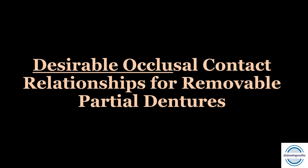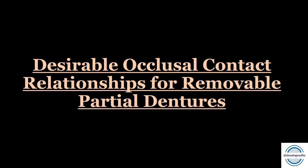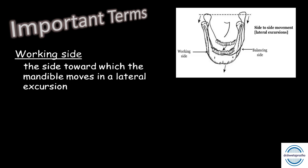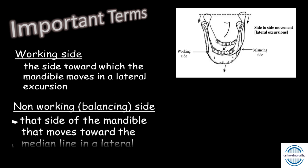Now let us study some desirable occlusal contact relationships for the removable partial denture, studied case-wise. These are very important as they come as objective questions. First, let us understand key terms. The working side is the side towards which the mandible moves in a lateral excursion. As seen in the picture, if the mandible moves towards the right side, the right side is the working side, and the opposite side is the balancing side — the non-working side, which moves towards the median line.